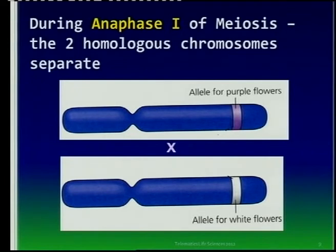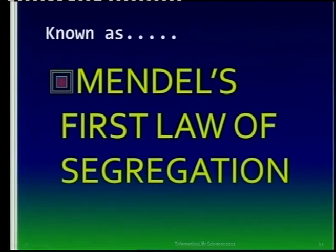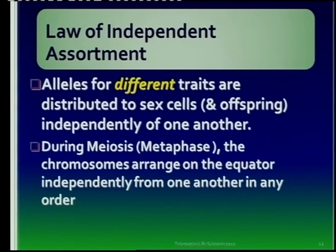During a certain phase of meiosis, the homologous pair — also referred to as homologues or bivalents — separate. In a heterozygous organism with two different alleles, during meiosis they separate, which means each gamete will have one of the two corresponding alleles and never both. This is called Mendel's First Law of Segregation. Make sure you know these definitions — very important for exam purposes.